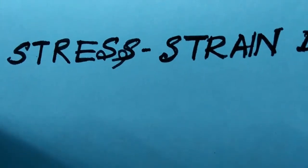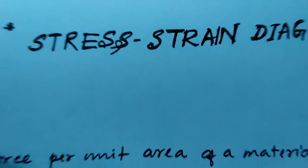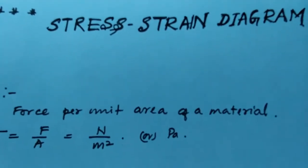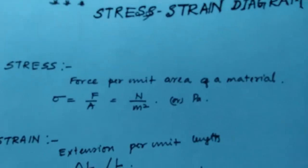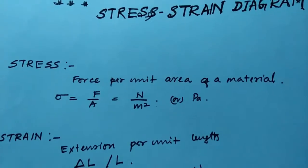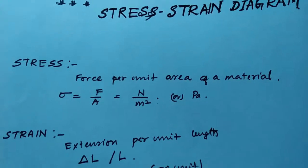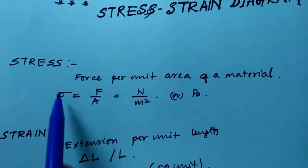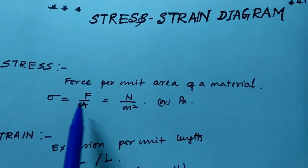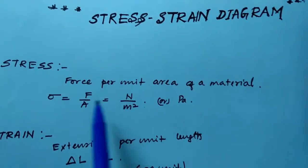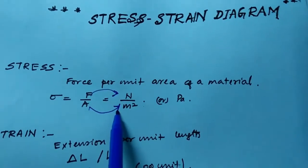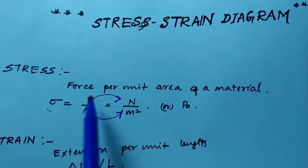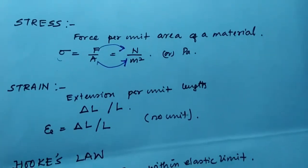Today our topic is the stress-strain diagram. Before we go to the stress-strain diagram, let's focus on a few definitions. What do you mean by stress? Stress is a force per unit area of a material. Stress is defined by sigma equals force per unit area. The unit for force is Newton and the unit for area is meter squared, so the unit for sigma, that means stress, is Newton per meter squared.